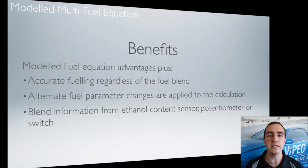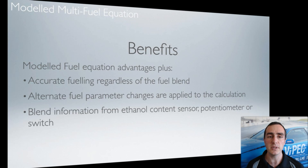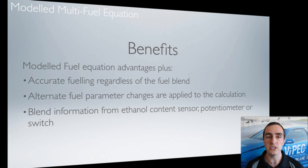The blend information that the ECU requires can come from a variety of sources. It can come from an ethanol content sensor, it can come from an analogue potentiometer, or it can come from a digital input switch. So you've got three different options, and we're going to talk about them in a bit more depth soon.